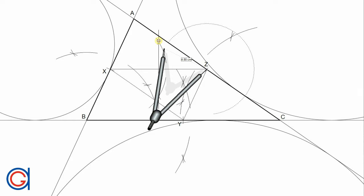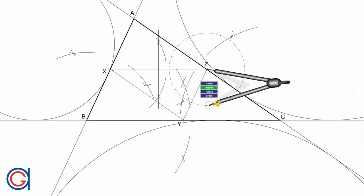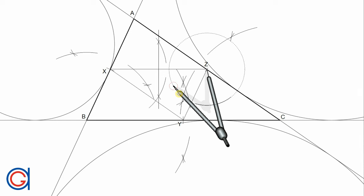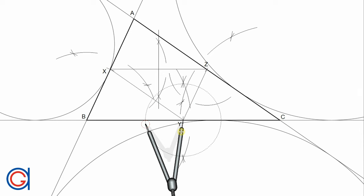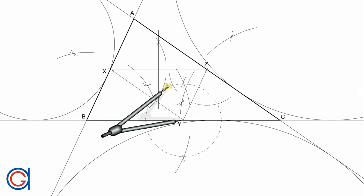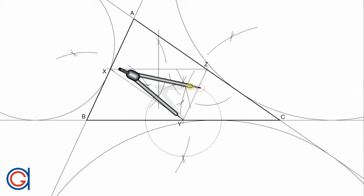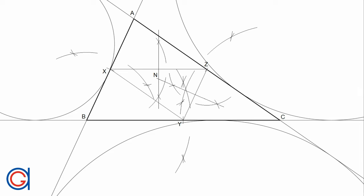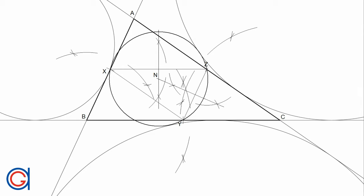Now we are going to repeat the same process with side yz. Where these two perpendicular bisectors intersect each other will be point N, the nine-point center. Now, setting our compass on N and with a radius N to z, we draw a circle in a thicker line, which is the nine-point circle of the given triangle ABC.